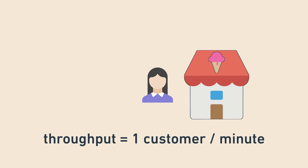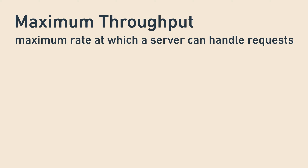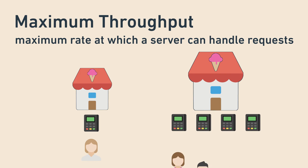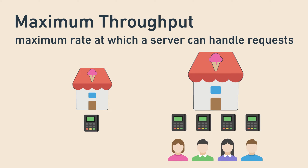A useful sibling of throughput is maximum throughput, which is the maximum rate requests can be served if the server is working at full speed. In the ice cream stand analogy, it's the maximum rate customers can be served if all employees are busy. For example, a small ice cream stand with one employee might serve up to one customer per minute, while a bigger one might be able to serve up to four customers a minute.